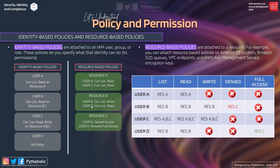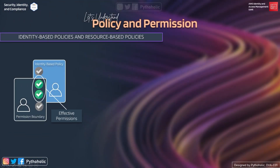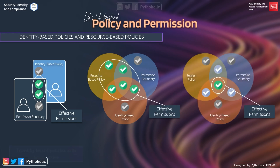For User D: it has no identity-based policy. From the resource-based policies, Resource B allows User D list and read, and Resource C grants User D full access. User D has no presence in Resource A's policy. So User D can perform list and read on Resource B, has full access on Resource C, and cannot access Resource A. This reinforces the point: even without an identity-based policy, a resource-based policy granting full access allows that user to operate on that resource.